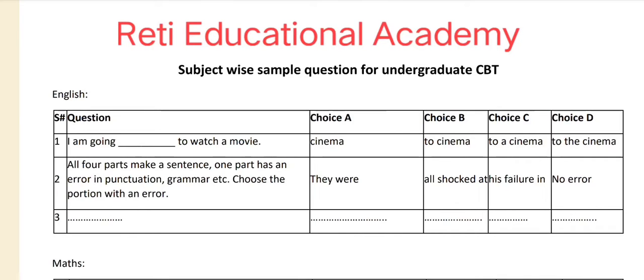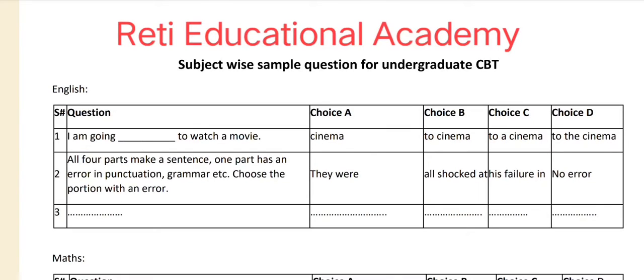In this video I will share only English MCQs. Two MCQs are given in the test sample paper. Question number one: I am going ___ to watch a movie. Option A: a cinema, B: to cinema, C: to a cinema, D: to the cinema.